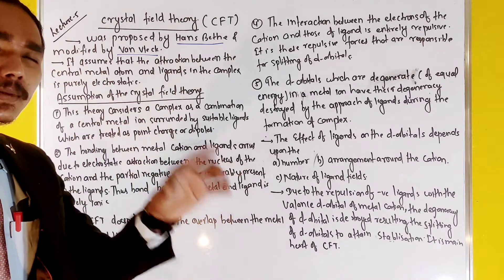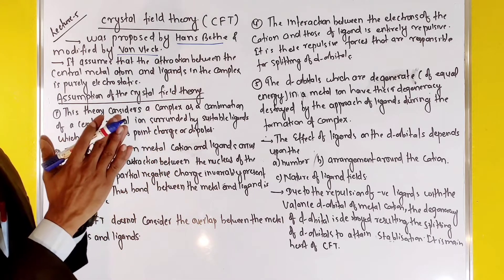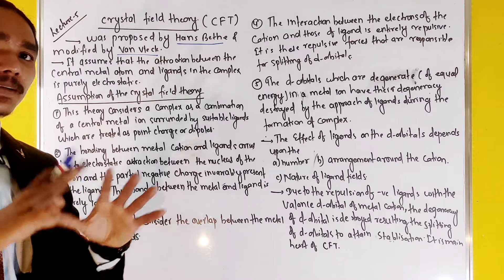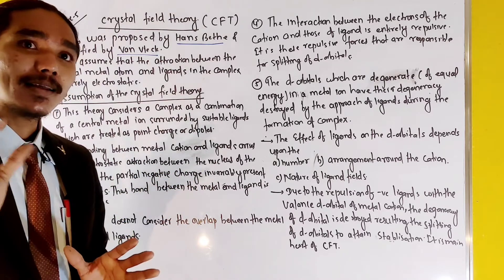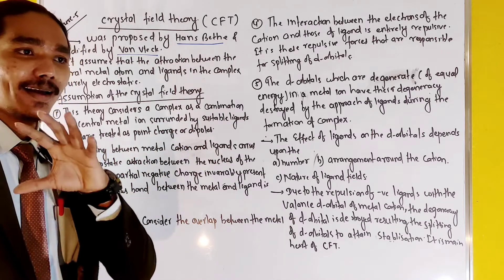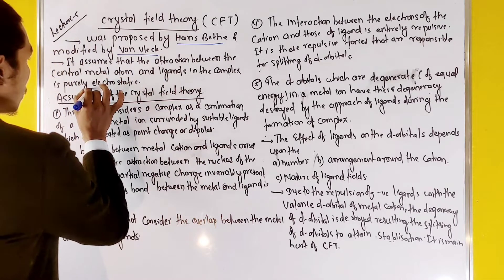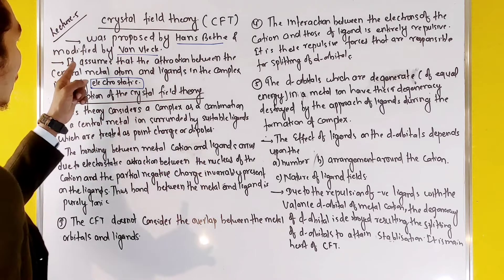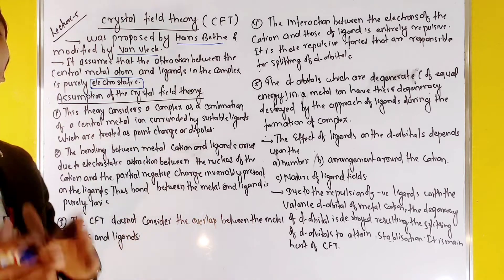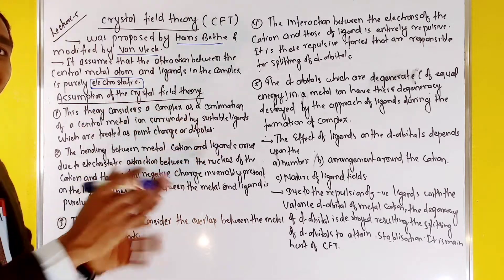The main assumption of crystal field theory is that it is based on electrostatic force. It assumes that the attraction between the central metal atom and the ligand in the complex is purely electrostatic — purely a plus or minus charge of attraction.